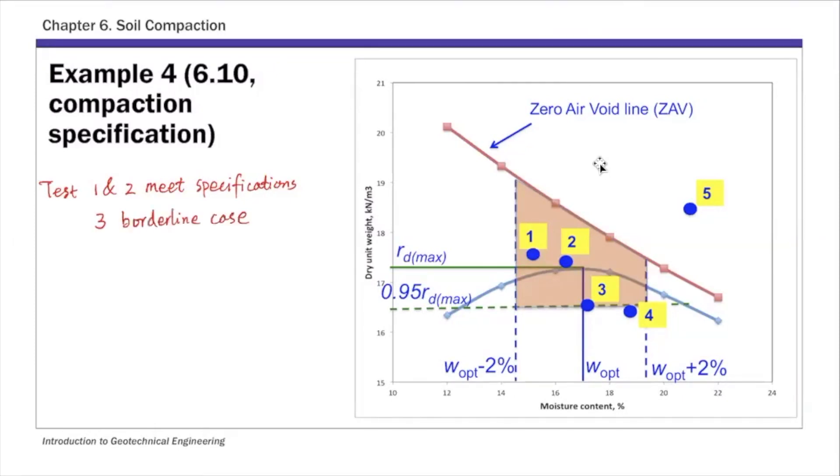And test number four, so this fourth point, this one is below 95% gamma d max. So it doesn't meet the first specification. Specifically gamma d field four is smaller than 95% gamma d max. So that's why it doesn't meet that specification.